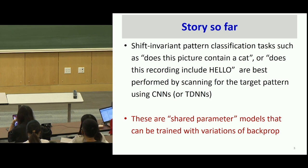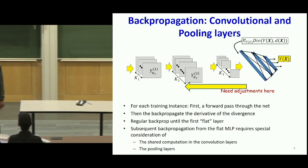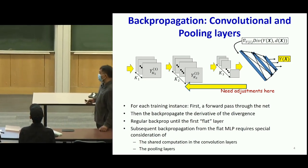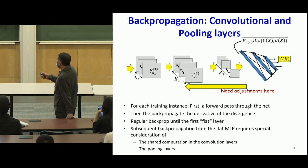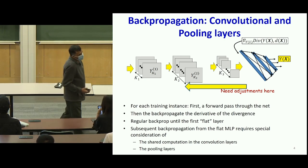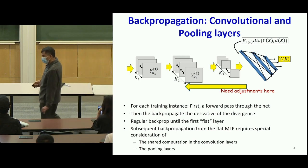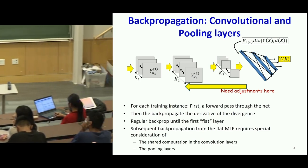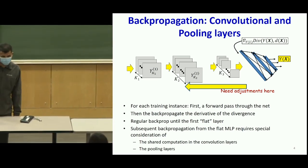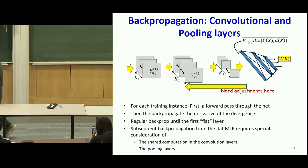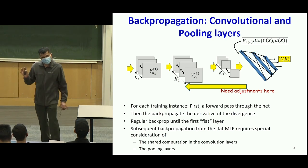All of these are shared parameter networks that can be trained using variations of backprop. You have training instances where you're given the input and a label. For each instance you first propagate it through the network, get an output which is the class prediction, compare it to the true label, and backpropagate the error from the end back into the network. The initial backpropagation happens through the final decision layers, which could be a complete MLP, a softmax, or a max.